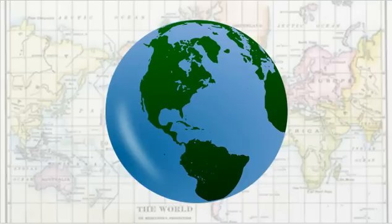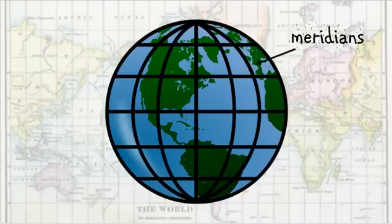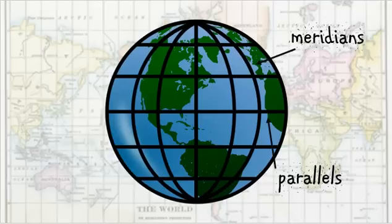Anyway, so we have our spherical Earth. But how do we put it on paper? Well, we need a common reference mechanism. So we add lines of meridians and parallels in the form of a graticule.